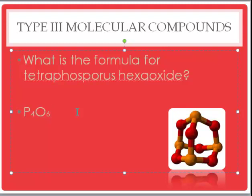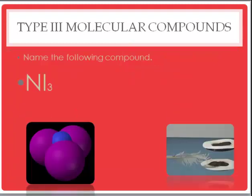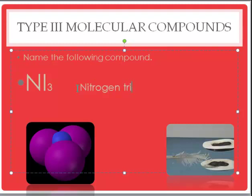The hardest part is first recognizing that it's a non-metal, non-metal combination — then you know to use the Greek prefixes. We never use Greek prefixes outside this naming system. Our last example is NI3. N is nitrogen, 3 is tri, and iodide.